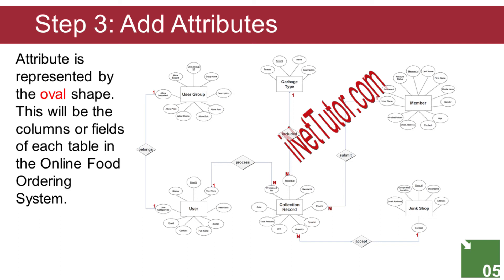Junk Shop entity attributes: shop_ID (primary key), shop name, address, contact, email, address, Google map location. Garbage Type entity attributes: type_ID (primary key), name, description, reward. Collection Record entity attributes: record_ID (primary key), member_ID (foreign key), shop_ID (foreign key), type_ID (foreign key), quantity, unit, total amount, date, processed by user_ID (foreign key).